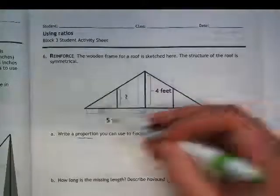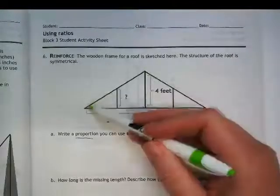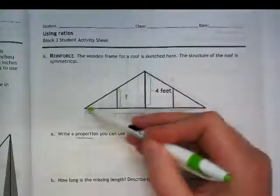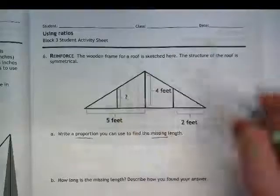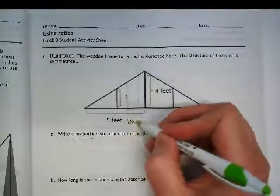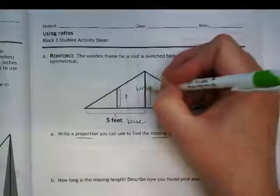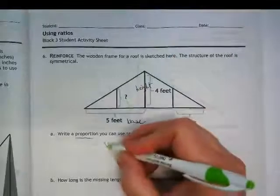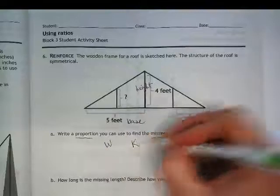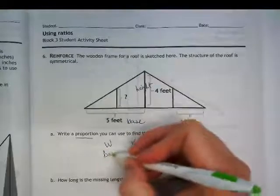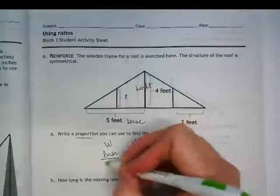So what do we know? We know that this large triangle is proportional to this small triangle. So we're going to call this measurement down here the base and this measurement here the height. So our word known unknown ratio, we're going to have base over height.